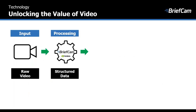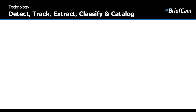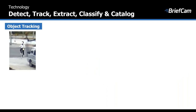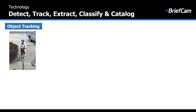In BriefCam we take raw video from, for example, the VMS system and process the video once into our database. BriefCam analyzes the entire content of the video and creates a structured database of information out of the unstructured video. We then present it in different presentation layers after processing it only once, delivering it many times to different stakeholders — making the video searchable, quantifiable, and actionable. We detect, track, extract, classify, and catalog every object.